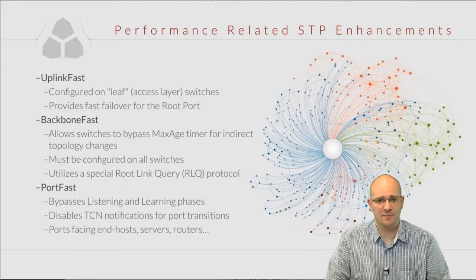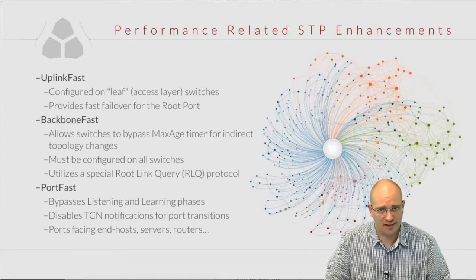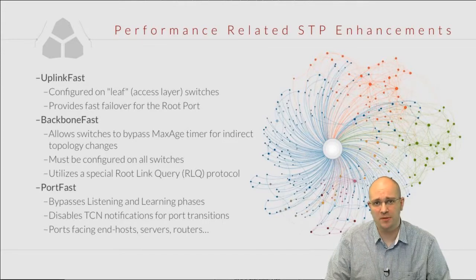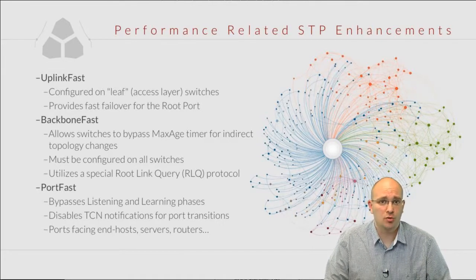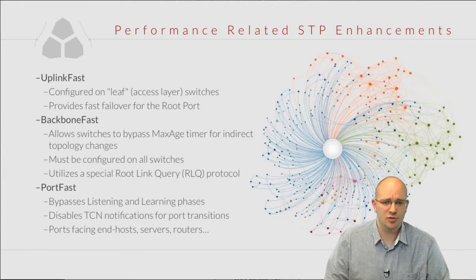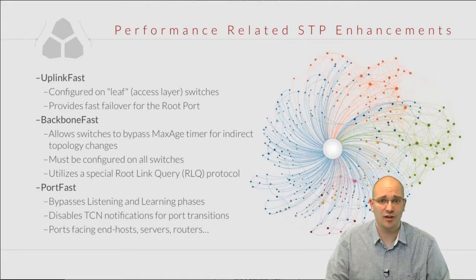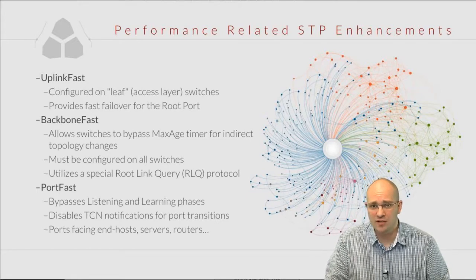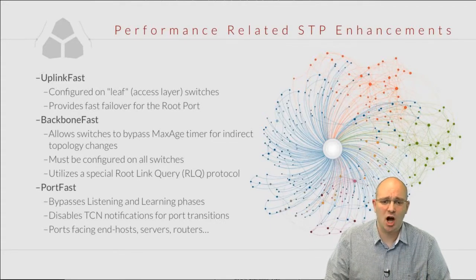The performance related Spanning Tree enhancements are uplink fast, backbone fast, and port fast. Uplink fast is a feature designed to optimize convergence for leaf switches — the switches that have uplinks to the distribution layer. This is usually applied on access switches, providing fast failover in case of loss of BPDUs from a root port. Backbone fast is designed to bypass the max age timer in case of an indirect failure or indirect topology change. In order for backbone fast to work, it needs to be enabled on all switches in the network, because it utilizes a special Spanning Tree based root link query (RLQ) protocol.